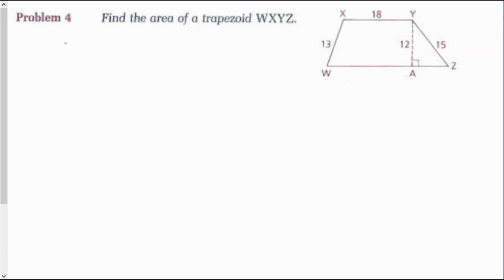Problem 4: find the area of trapezoid WXYZ. Dropping an altitude from vertex X to point E breaks the trapezoid into two right triangles and a rectangle. The area of this trapezoid equals the two right triangles added to the rectangle. So I can divide the trapezoid, find the area of each part, and add them together to get the total area.